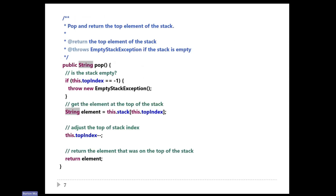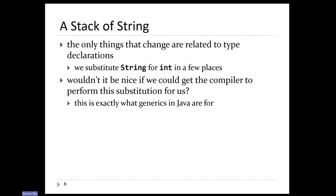Looking inside the methods — for example, pop — almost nothing changes. Pop now returns a string; the only thing that changes is the element type you retrieve in the middle of the method. The problem with this solution is that you end up copying code over and over again. If you make a stack of dates, you now have a date stack, and only a few locations in your code change. The only changes are related to some types — you substitute string for int in a few places. So it'd be nice if the compiler could do this work for us, and synthesize a new class automatically.